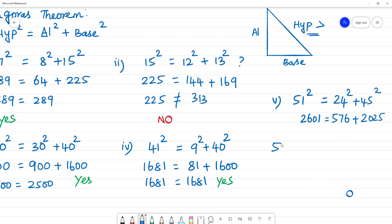576 plus 2025: add them and we get 2601 equal to 2601. Then this forms a Pythagorean triplet. The answer is yes.